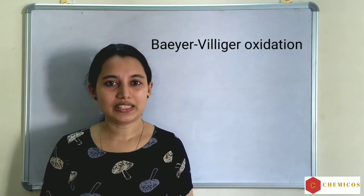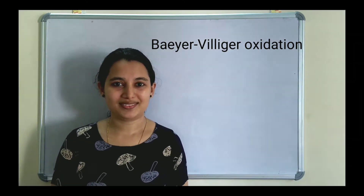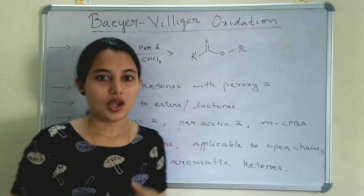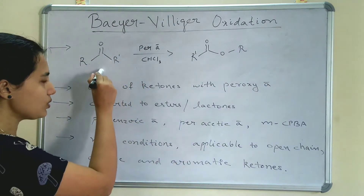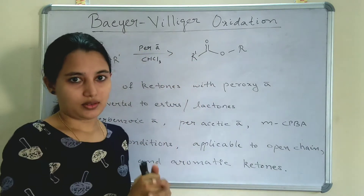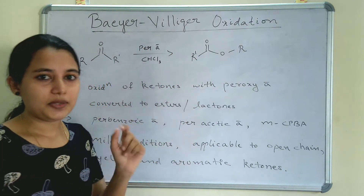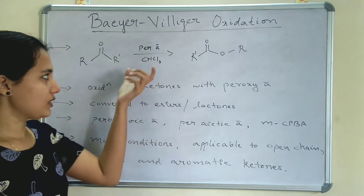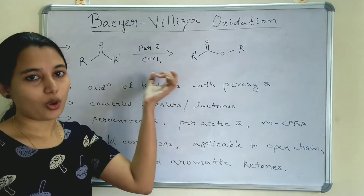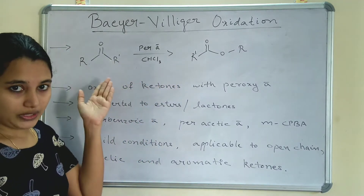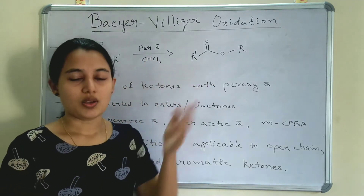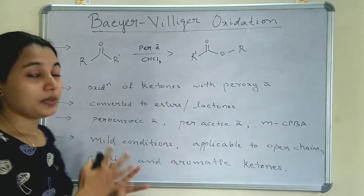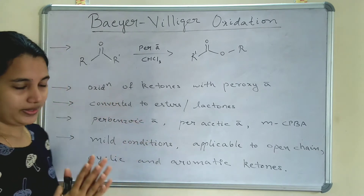So let's see what is Baeyer-Villiger Oxidation in a simple manner. Baeyer-Villiger Oxidation is the oxidation of ketones to an ester or lactones in presence of a peracid and a solvent such as chloroform. Oxidation of ketones to esters or lactones is called Baeyer-Villiger Oxidation.